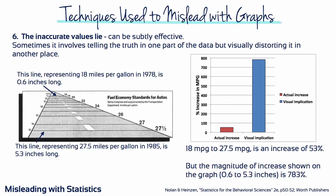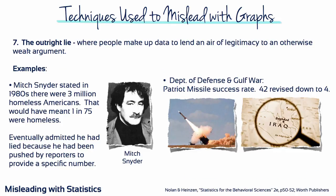Number six: the inaccurate values lie. This lie can be subtly effective. Sometimes it involves telling the truth in one part of the data, but visually distorting it in another place. This figure from the New York Times purports to show the mandated fuel economy standards set by the US Department of Transportation. The standard required an increase in mileage from 18 miles per gallon to 27.5 — that's an increase of 53%. But the magnitude of increase shown in the graph is actually 783%.